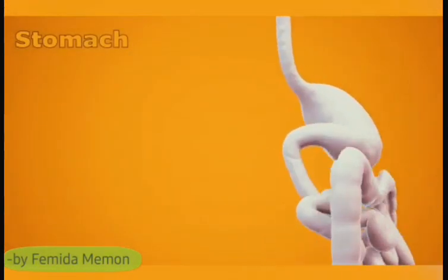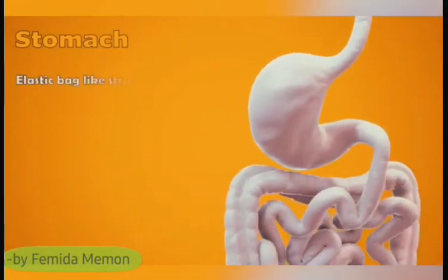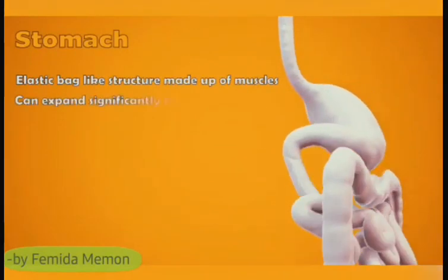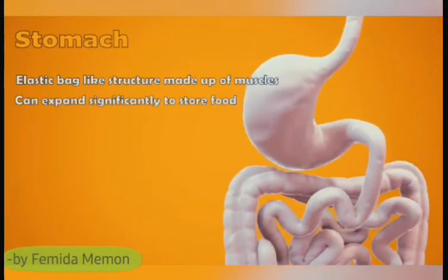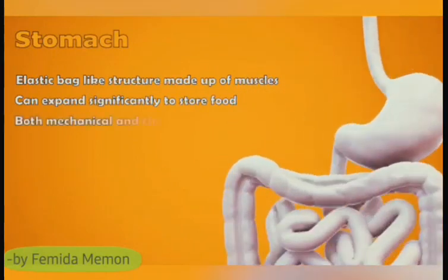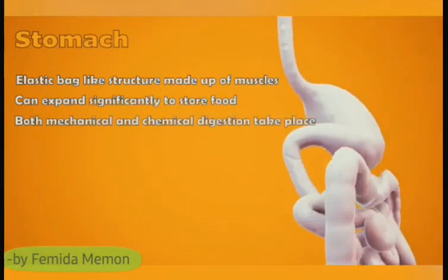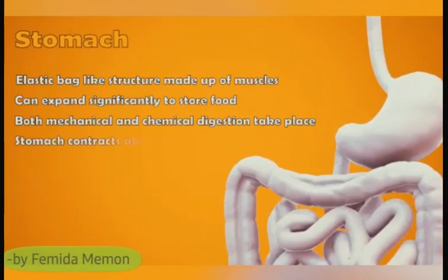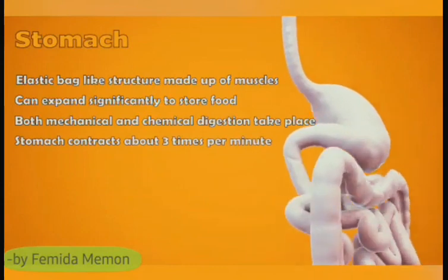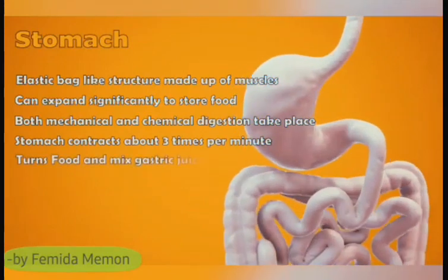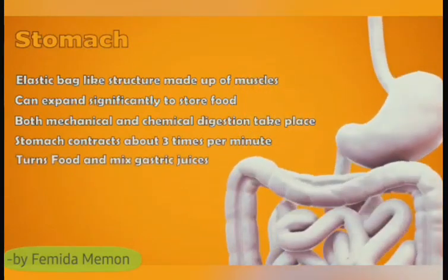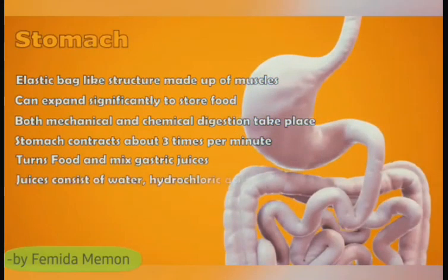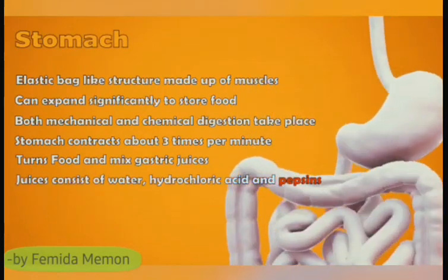Stomach: The stomach is an elastic bag-like structure made up of muscles and can expand significantly to store food. Digestion of food by both mechanical and chemical processes occurs here. The stomach contracts about 3 times per minute, turning the food and mixing it with gastric juices. These juices consist of water, hydrochloric acid and the enzyme pepsin.